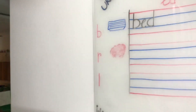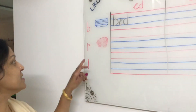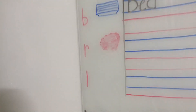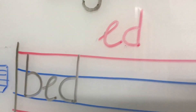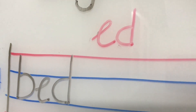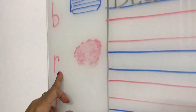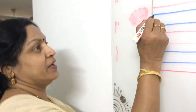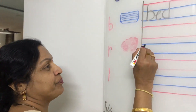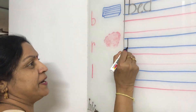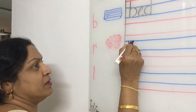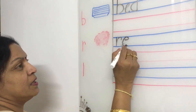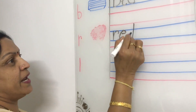What is the next letter? See here — what is this? This is R. When you join this R letter to ED we can make RED. Okay, it will become RED. R... E... D... RED.